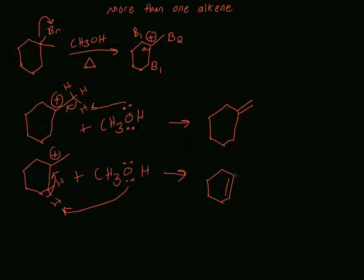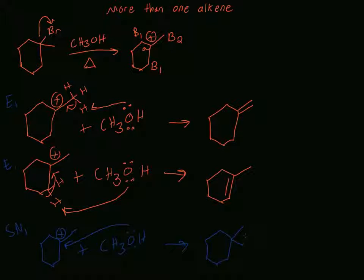Our second alkene product has the double bond at a different position. E1 always competes with SN1, so we also need to show the SN1 product: CH₃OH attacks the carbocation to give a product with an OCH₃ group. The positive charge on oxygen would be resolved by deprotonation, but further SN1 details are in my SN1 videos.